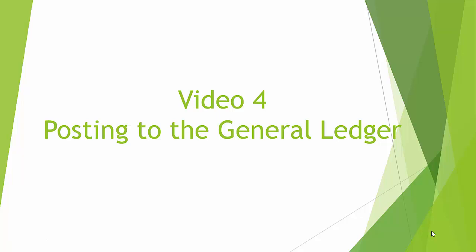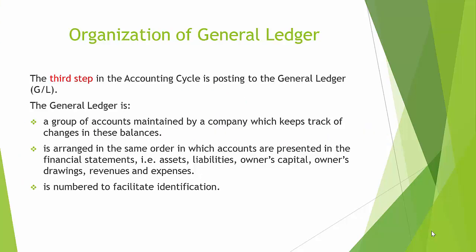Welcome back. In video 4, we will be posting to the general ledger. The third step in the accounting cycle is posting to the general ledger. The general ledger is a group of accounts maintained by a company which keeps track of changes in these balances. It is arranged in the same order in which accounts are presented in the financial statements: assets, liabilities, owner's capital, owner's drawings, revenues, and expenses. And it is numbered to facilitate identification.